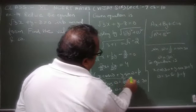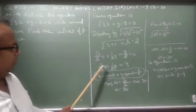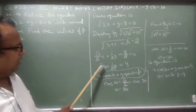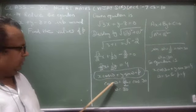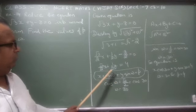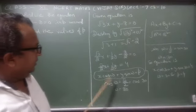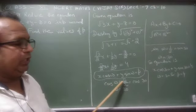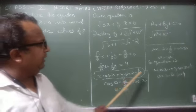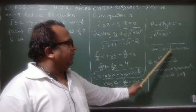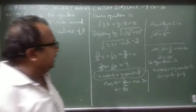Normal form से compare करने पर: cos ω = √3/2 और sin ω = 1/2। cos ω = √3/2 — यह 30° की value होती है, तो ω = 30°। sin ω = 1/2 — sin 30° की value होती है, तो ω = 30° confirm हो गया।